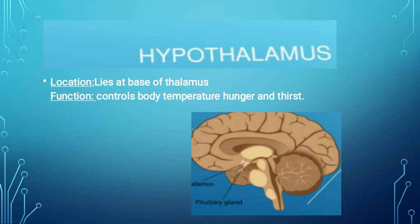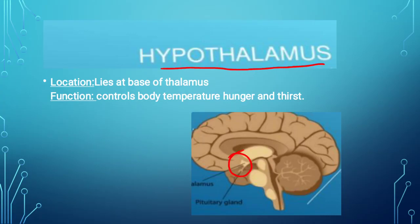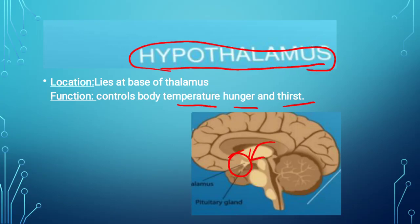The third part of the forebrain is the hypothalamus. Its location is that it lies at the base of the thalamus. The hypothalamus is present at the base of the thalamus. Its function is that it controls body temperature — maintaining our body's temperature is its job — as well as hunger and thirst. All these things are controlled by our hypothalamus, which is the third part of the forebrain.